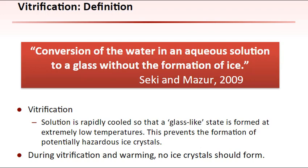There are notable differences between slow freezing and vitrification. In the slow freeze method, as the temperature is lowered, water will crystallize outside the cell, osmotically drawing water from within the cell as the extracellular solute concentration increases. In contrast, during vitrification, the solution is rapidly cooled so that a glass-like state is formed at extremely low temperatures. This prevents the formation of potentially hazardous ice crystals. During vitrification and warming, no ice crystals should form.